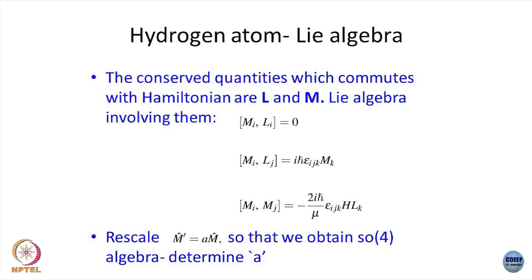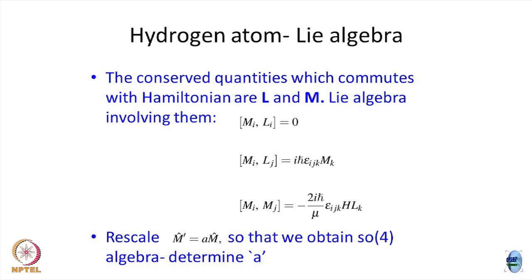The conserved quantities commute with the Hamiltonian. These are the orbital angular momentum and the Runge-Lenz vector components. In the Lie algebra involving them, since L·M = 0, it is trivial to check that [M_i, L_i] = 0. However, [M_i, L_j] has a non-trivial transformation — it involves the other components of the Runge-Lenz vector. You must also find the algebra among the Runge-Lenz vector components themselves, and make a scaling by an appropriate constant so the algebra resembles an SO(4) algebra.